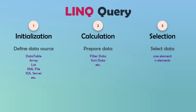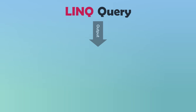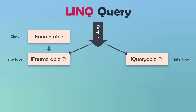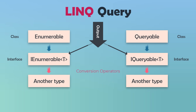A query could have only initialization and calculation, or initialization and selection. Initialization must be available in each query because it contains the data source. The output of a LINQ query is either IEnumerable of T or IQueryable of T. If we are using enumerable methods, the output will be IEnumerable of T. If we are using queryable methods, the output will be IQueryable of T. To convert these types to a standard type we can use conversion operators, for example the ToArray method.